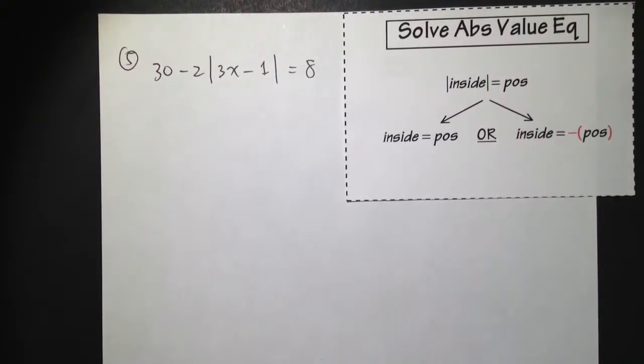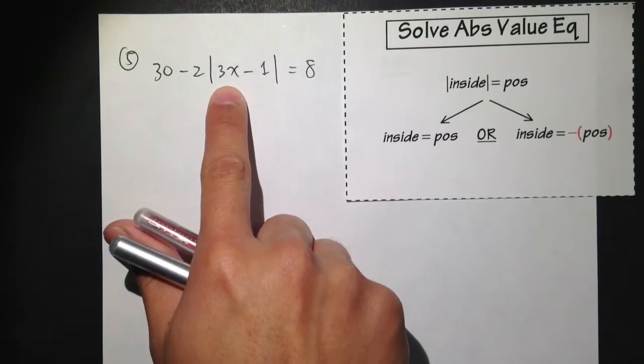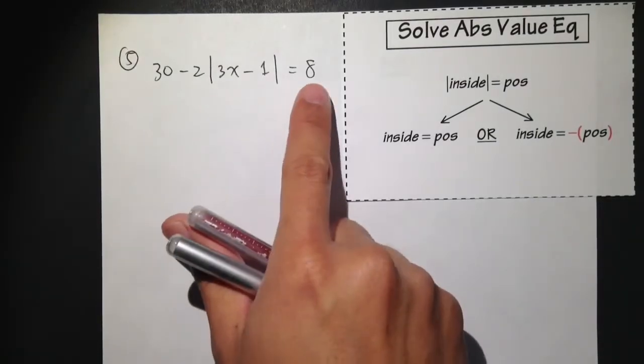Let's take a look at example number 5. 30 minus 2 times absolute value of 3x minus 1 is equal to 8.